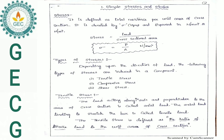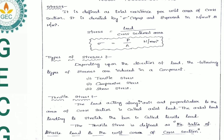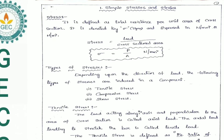First of all, we are discussing about Stress. Stress is defined as total resistance per unit area of cross section. It is denoted by sigma and expressed in Newton per mm² or Newton per m². Stress is equal to load divided by cross sectional area: sigma = P/A Newton per mm².